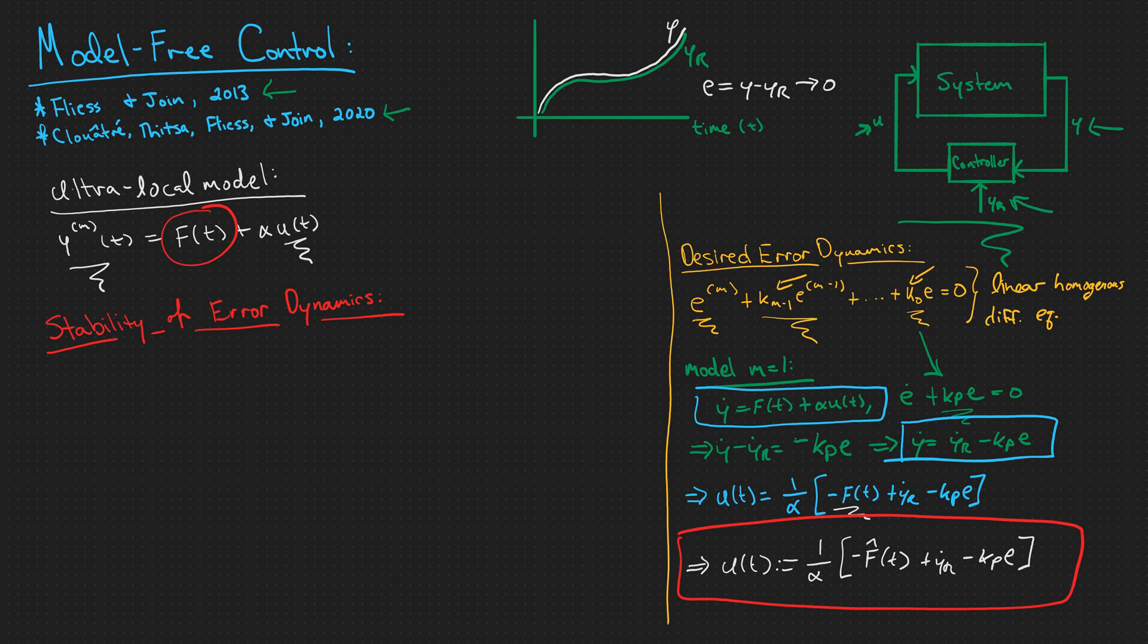Now let's look at the stability of the error dynamics using this controller down here that we have derived. So we have an ultralocal model of order 1, so we have y dot is equal to f of t plus alpha times u of t, and we're going to plug in what we have derived u of t to be here. So this is 1 over alpha times minus f hat of t plus y sub r dot minus kp e.